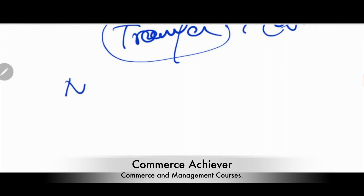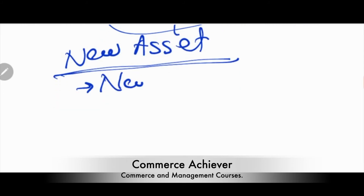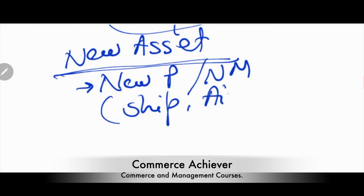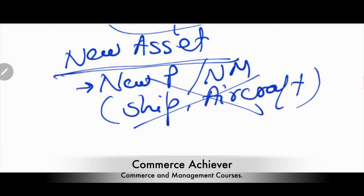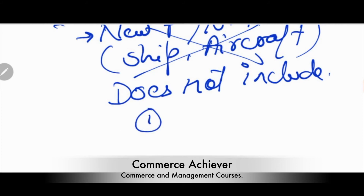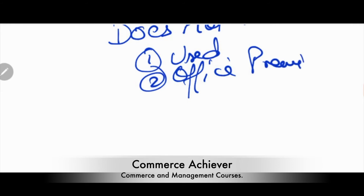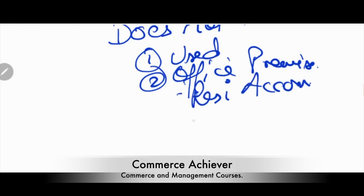Now let's understand what is included in 'new asset'. New asset means new plant or new machinery. However, ships and aircraft are specifically excluded. Also excluded is any plant or machinery that was previously used — whether used in India or outside India before installation. Office premises are also not included.